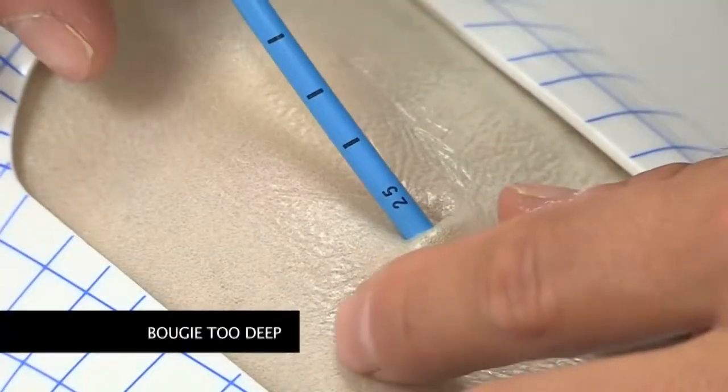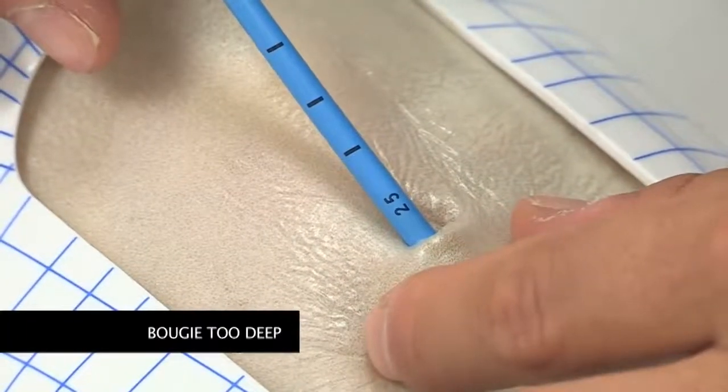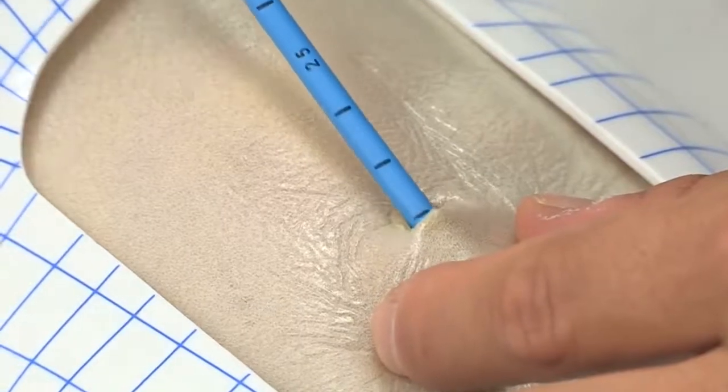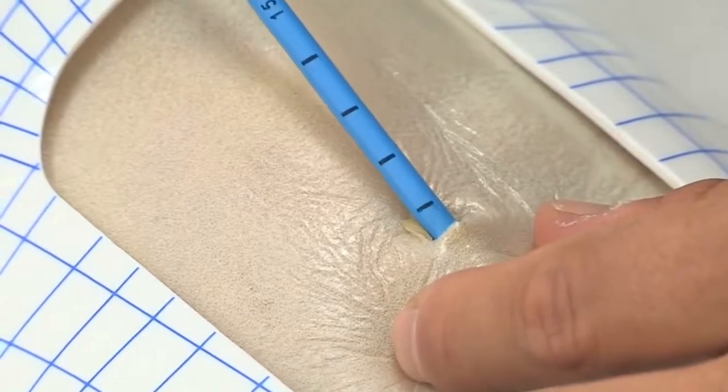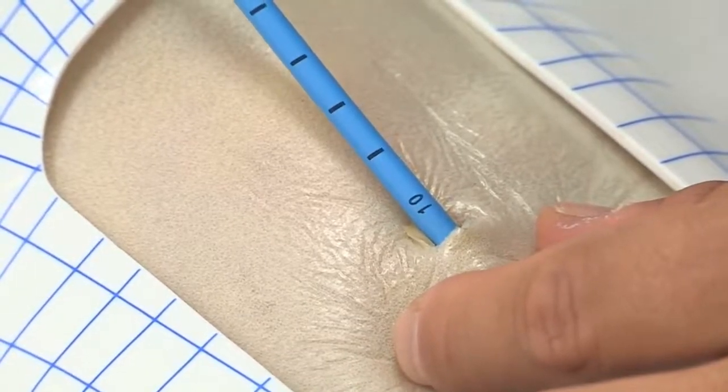Bougie insertion depth should be limited between 10 to 15 cm. If further insertion is required to identify correct placement, it is ideal to withdraw it to this depth prior to oxygenation or tube insertion.